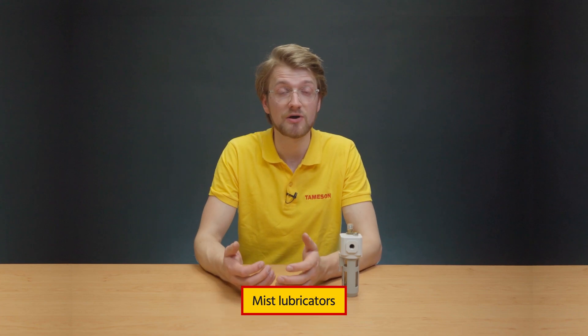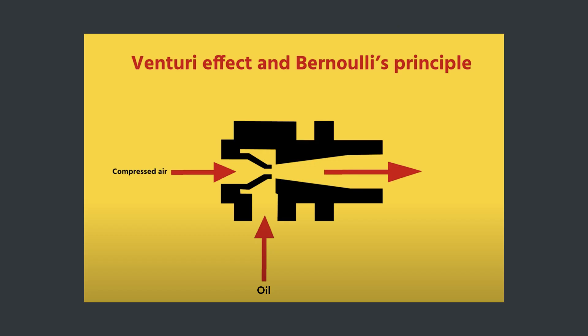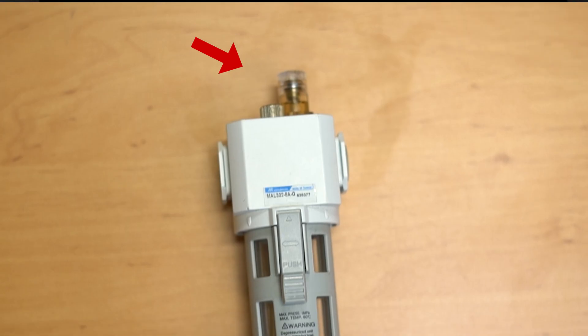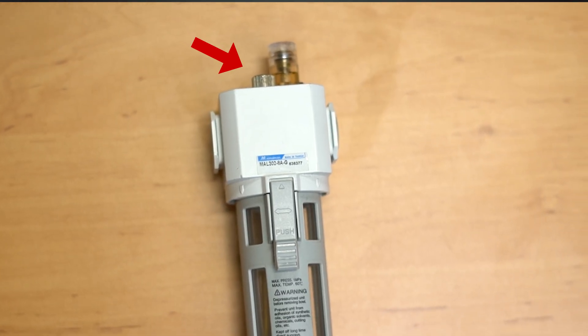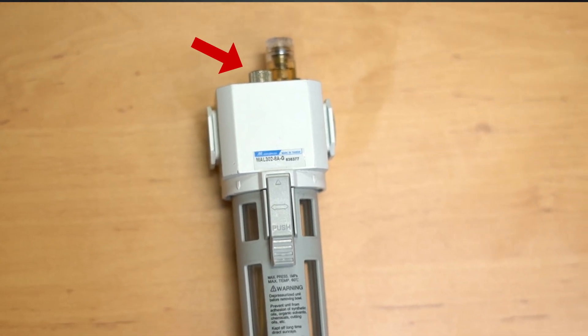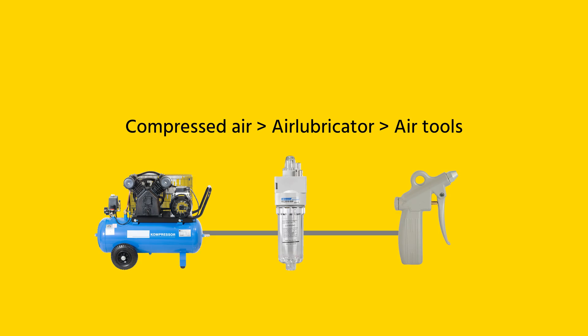In pneumatic systems, the most commonly used lubricators are mist lubricators, which produce a fine mist of oil particles mixed with compressed air. They operate on the Bernoulli principle. The air flows through a venturi where the underpressure draws the oil from the reservoir. A set screw allows the adjustment of the oil flow. The oil mist is then carried to the pneumatic tools and equipment, providing lubrication.